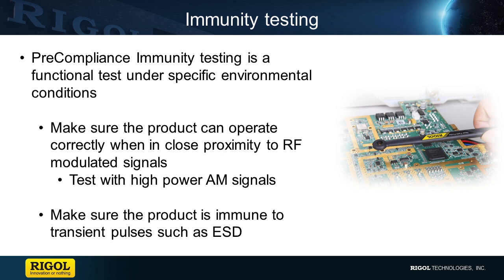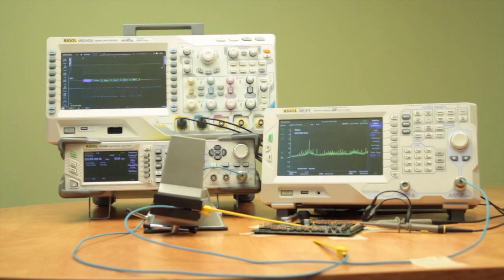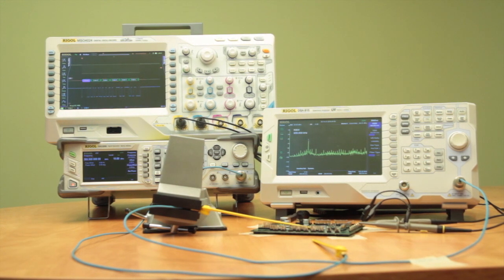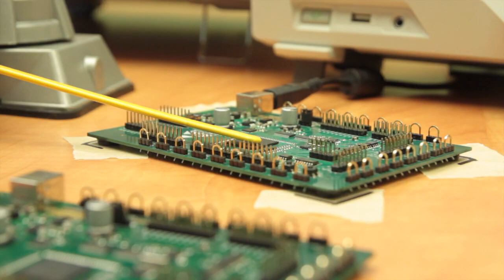Now let's look at a basic immunity test setup for debugging a design. Here we have a basic immunity test setup where we'll be doing some functional testing of the board while bombarding it with an RF signal. Here's our test board. We have it set up to take radiated emissions measurements while we also do the immunity as well.